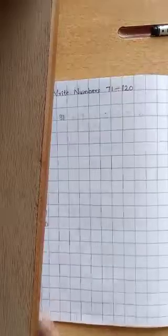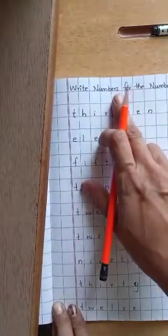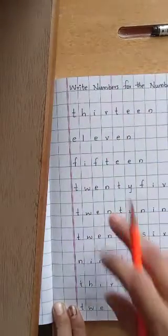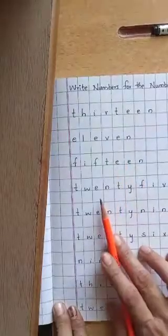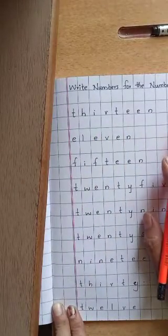Okay. After that, on the next page, write the numbers for the number names. We have given here number names. We have to read those number names and write the particular number for that number name.